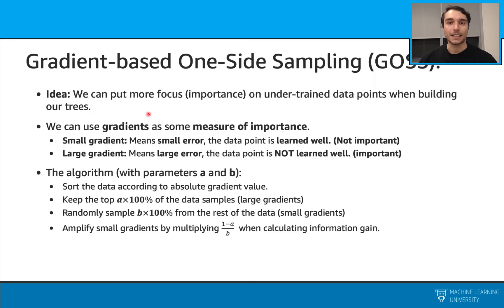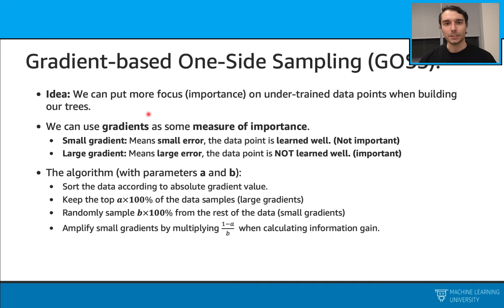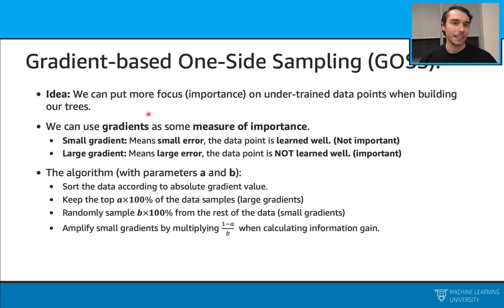Gradient-Based One-Side Sampling. The main idea is to put more focus or importance on the under-trained part of the dataset. We can look at the gradients, and that will give us some idea about the importance of those data points. Small gradients mean that we have small errors for those data points, and it means that we learned those data points very well. Large gradients mean that we have large errors for those data points, and we didn't really learn those data points. With this algorithm, we will try to learn these large gradient data points more aggressively.